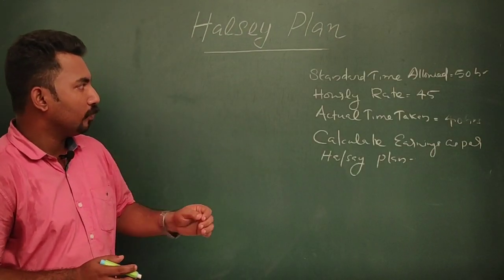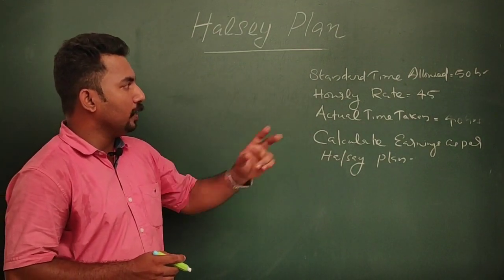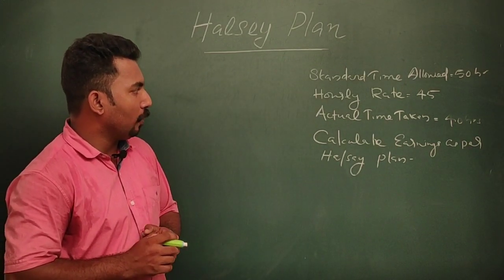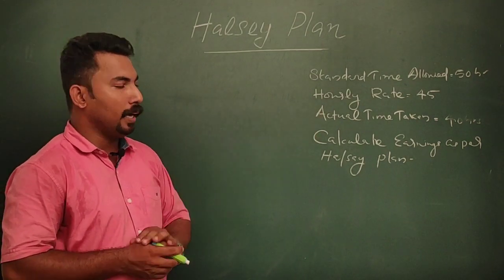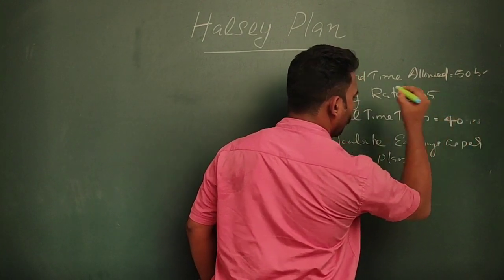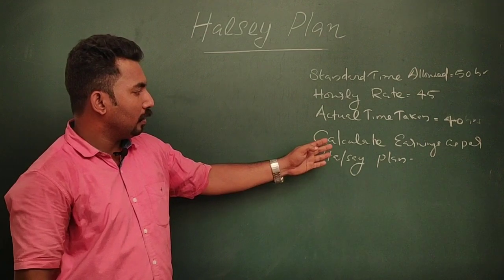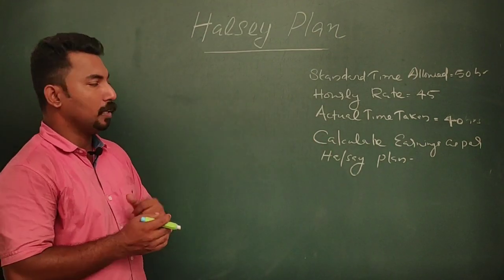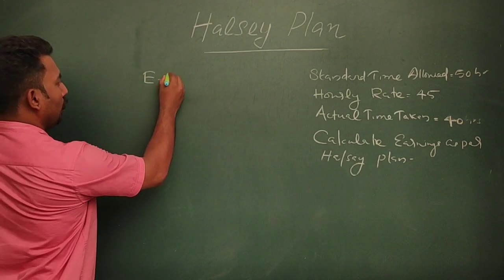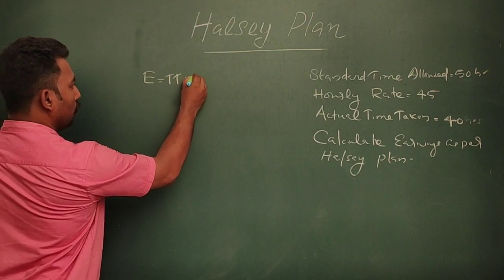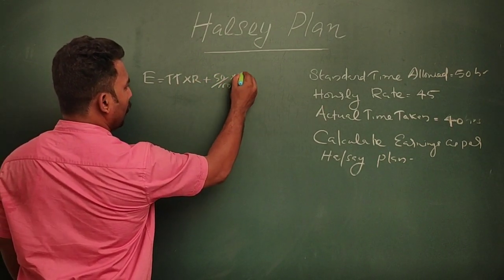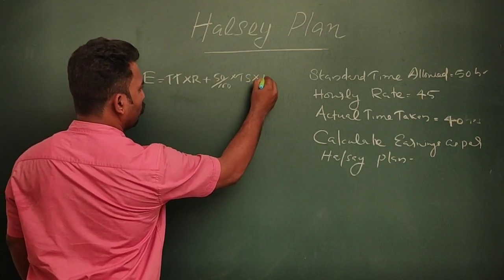Here is a worked example. Standard time allowed is 50 hours, hourly rate is ₹45, and actual time taken by the employee is 40 hours. We are required to calculate earnings as per the Halsey plan. Earnings equal time taken into rate plus 50% into time saved into rate.